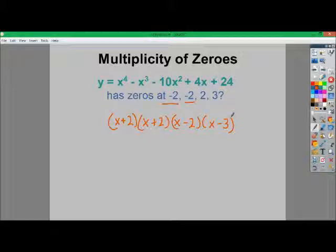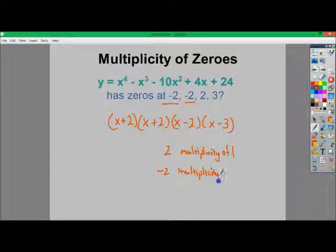The multiplicity would be how often those zeros happen. This x minus 2, this 2, I would say that it has a multiplicity of 1 because it only happens one time, whereas negative 2 has a multiplicity of 2. The neat thing is you can get an interesting picture of what's going to happen based on the multiplicity itself.